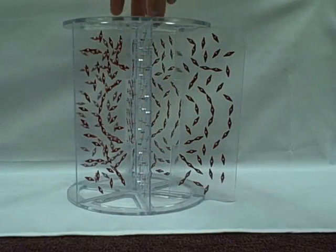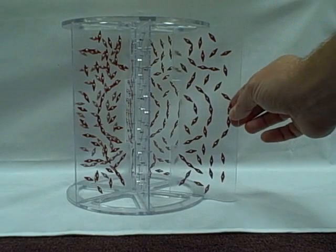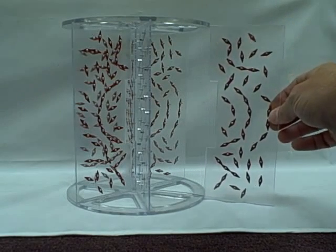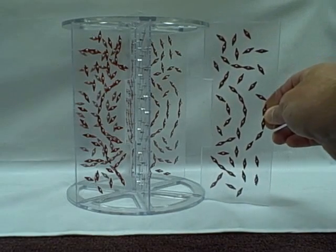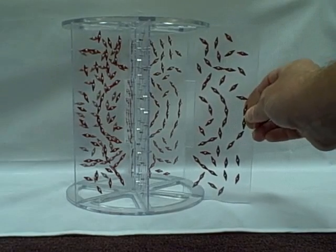Here you have the second part of the magnetic lines of force demonstrator. As you can see it has a removable panel here, and we simply slide that into the slot.